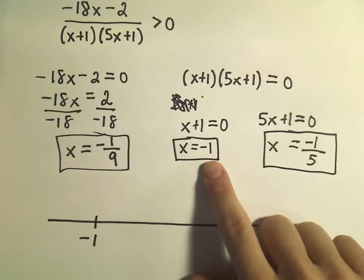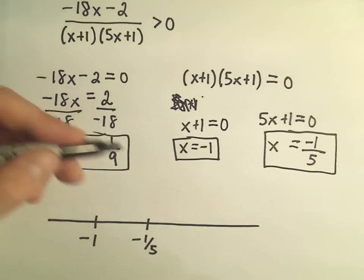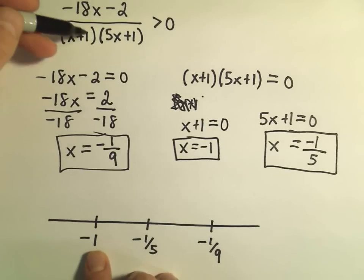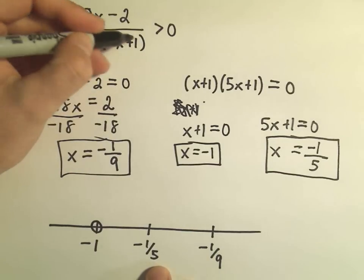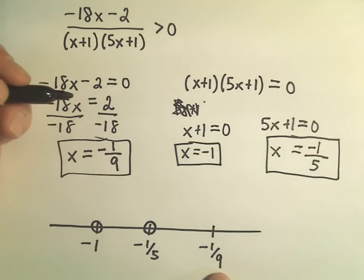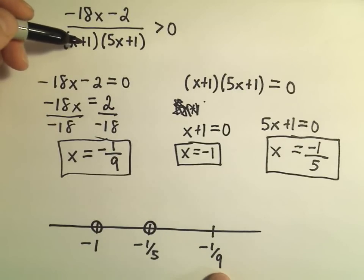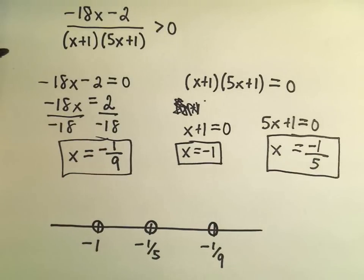Negative 1 would be the furthest to the left on our number line, then negative 1 fifth would come next, and negative 1 ninth, since it's even closer to 0, would come last. The first thing I do is test each one of these numbers. Negative 1 produces 0 in the denominator — that can't work. Negative 1 fifth produces 0 in the denominator; dividing by 0 is undefined, so that can't satisfy the inequality either. And negative 1 ninth gives 0 in the numerator — 0 over some number is 0, but 0 is not greater than 0, so that one doesn't work either.